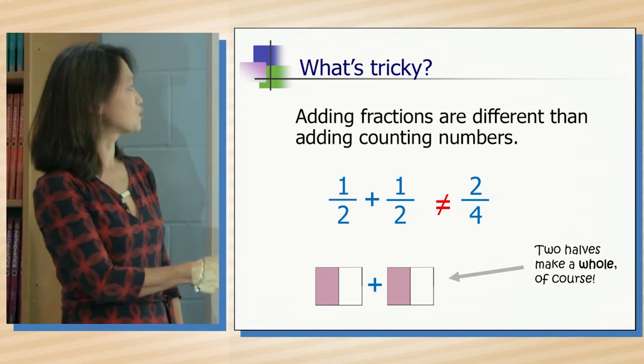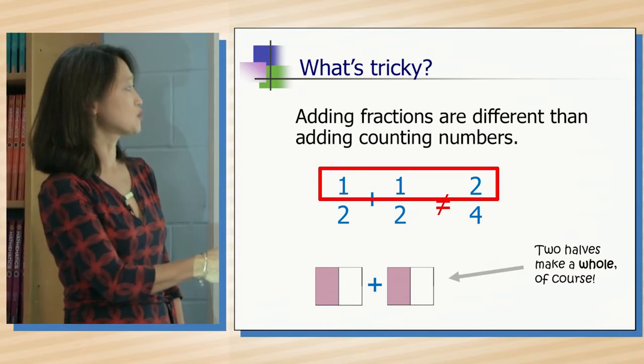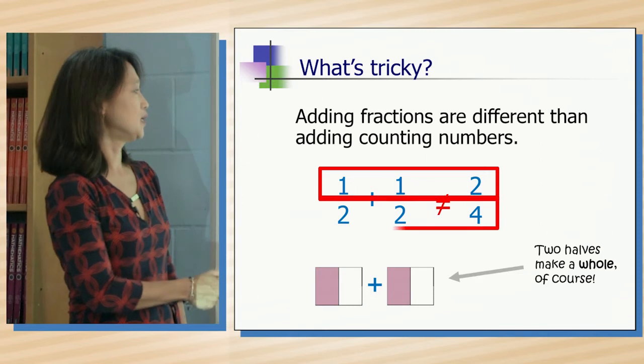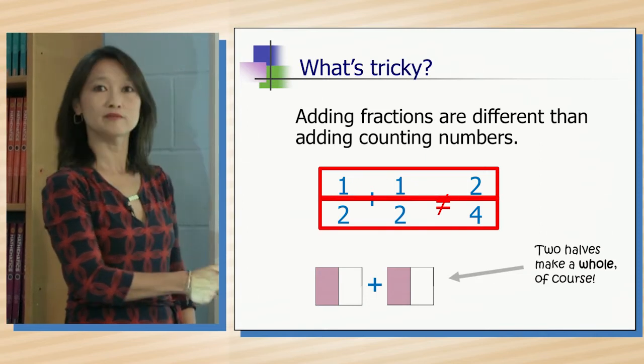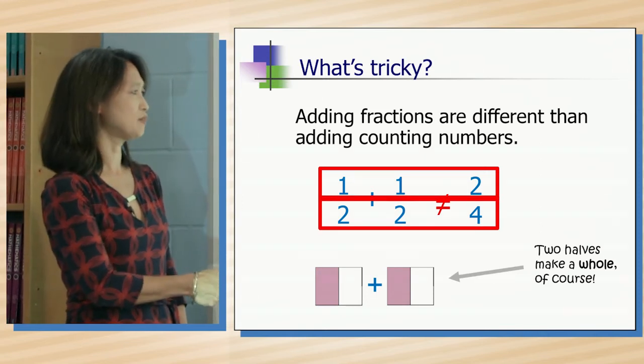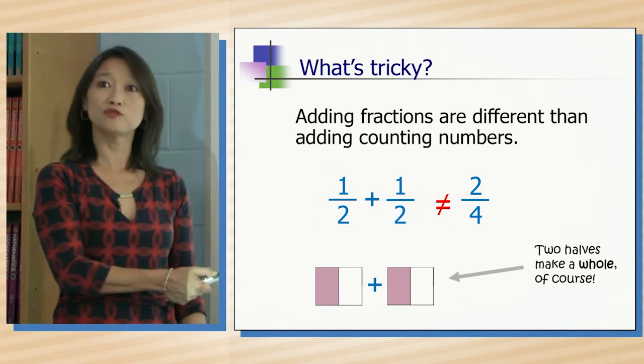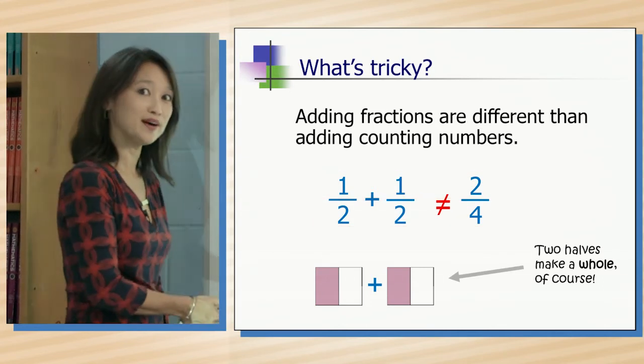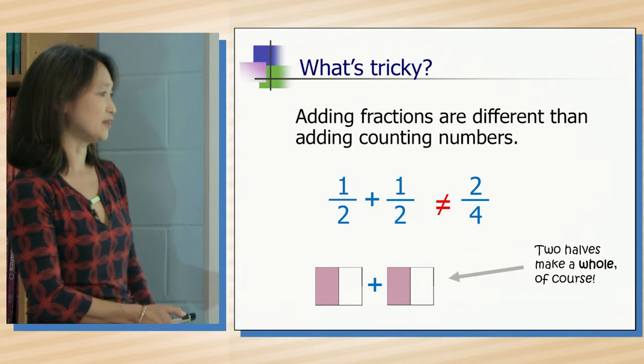And if we were to add across, 1 plus 1 equals 2, and 2 plus 2 equals 4, you would get a half plus a half equals two-fourths. And we know a half is a very friendly fraction,